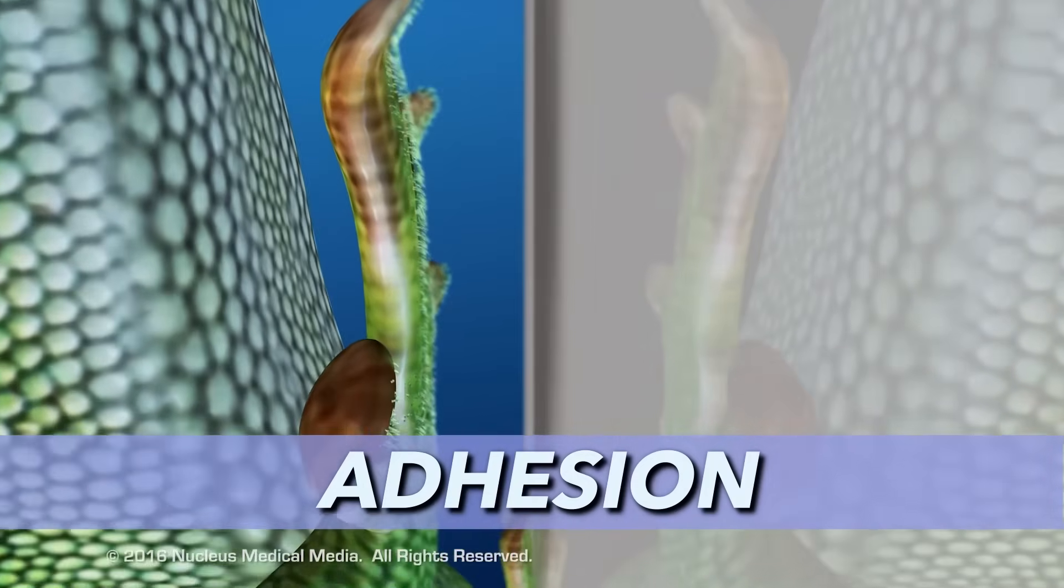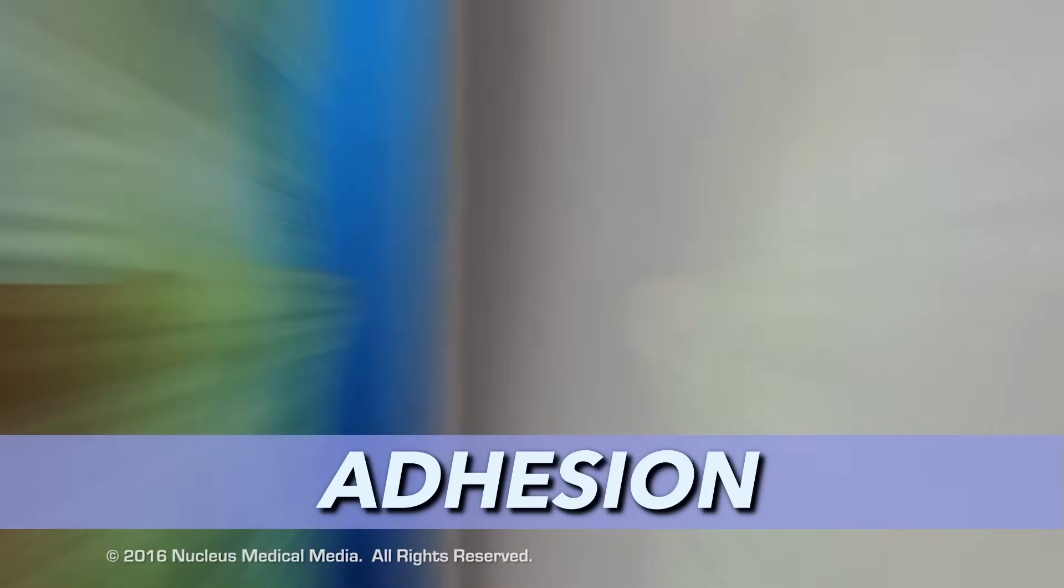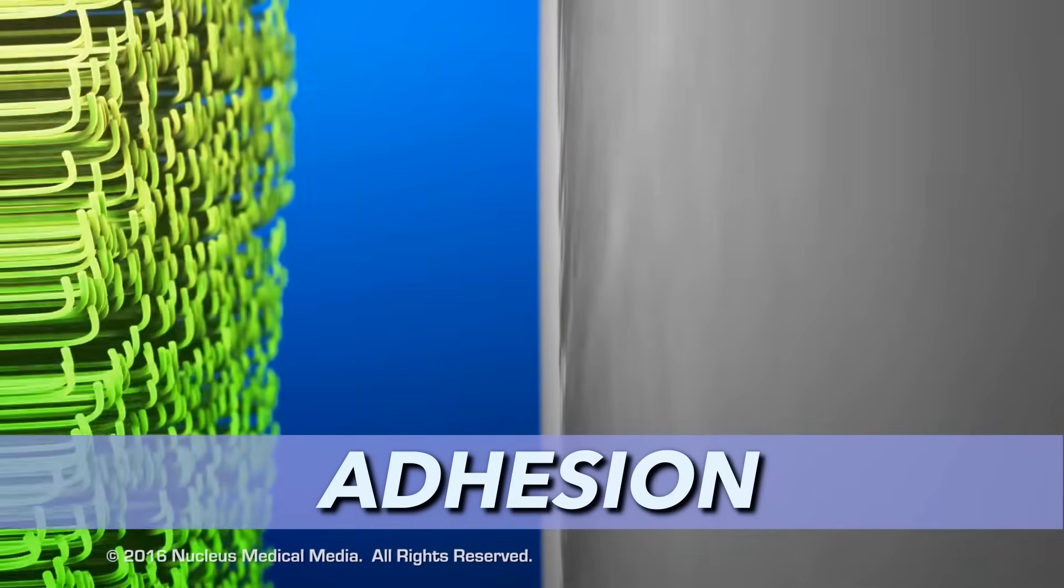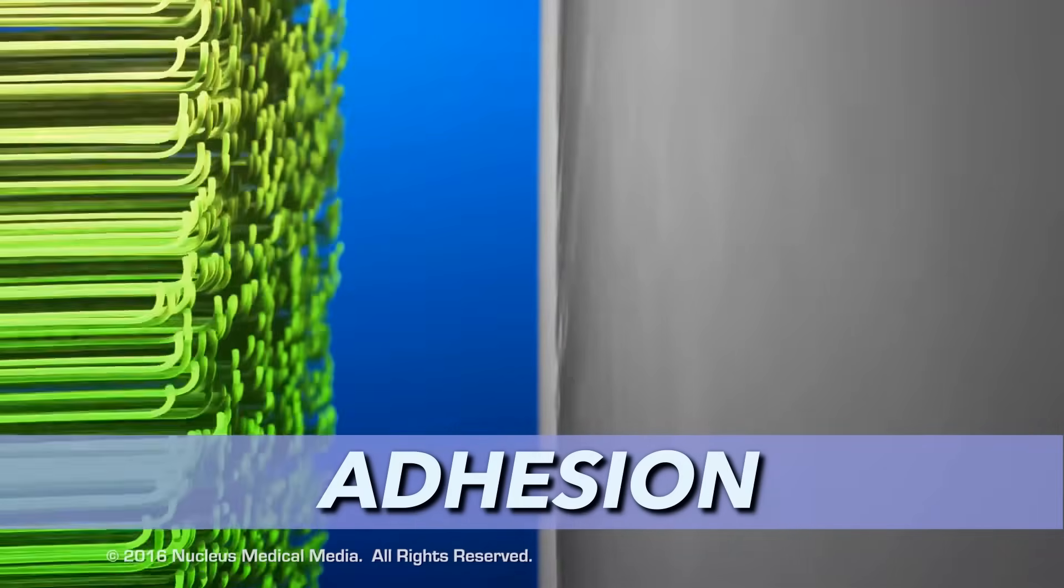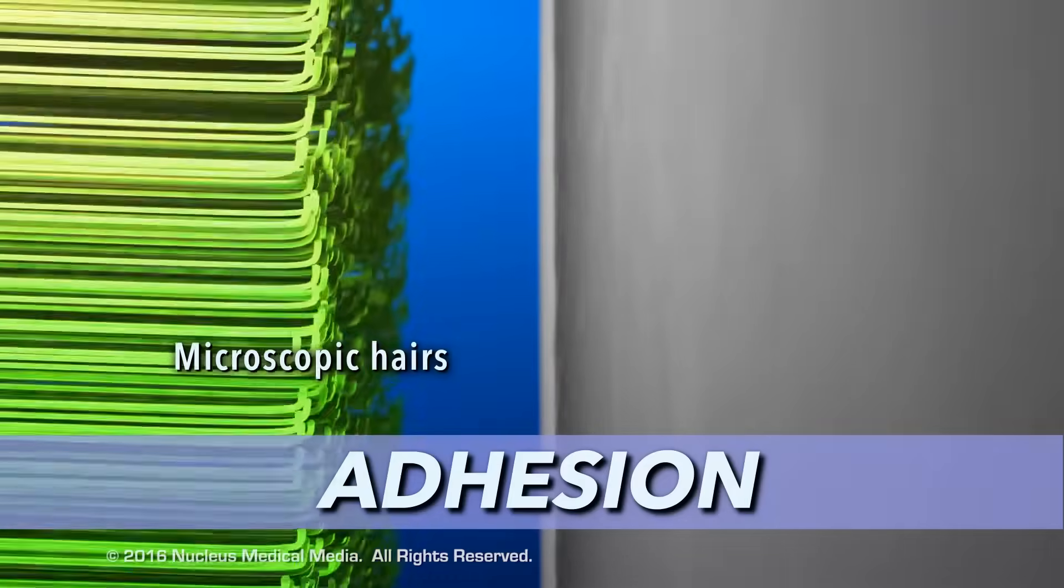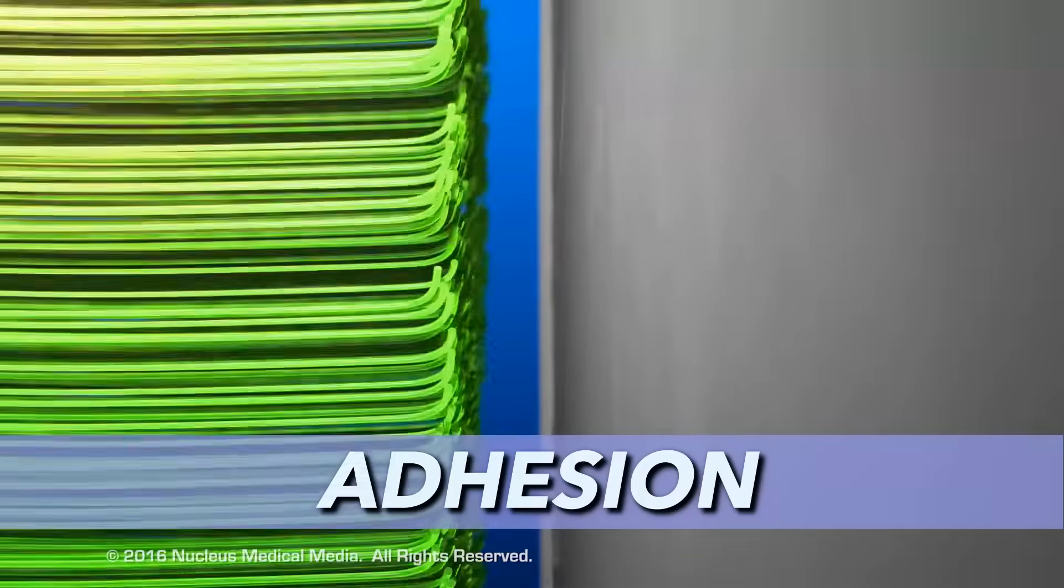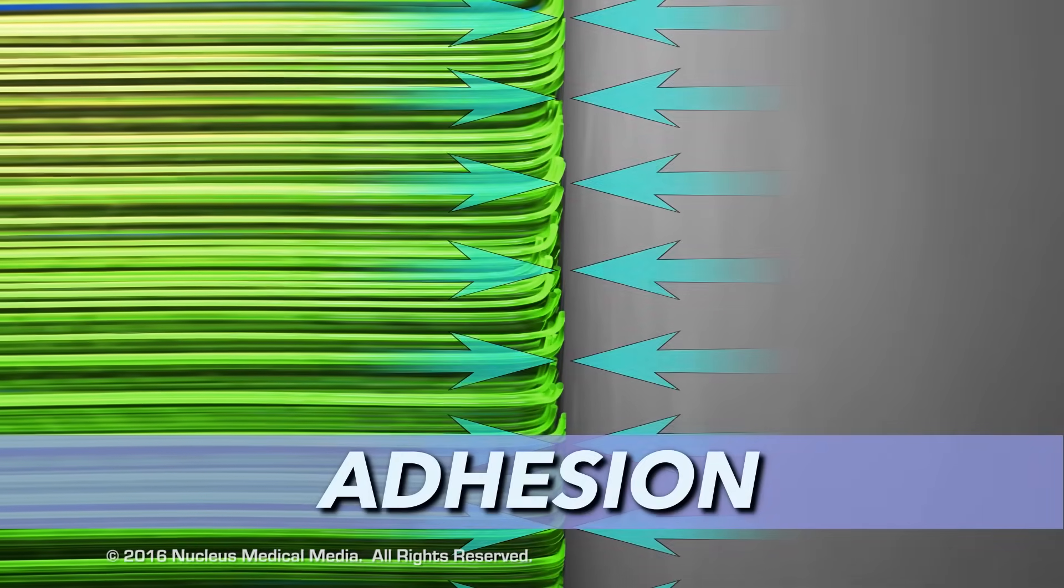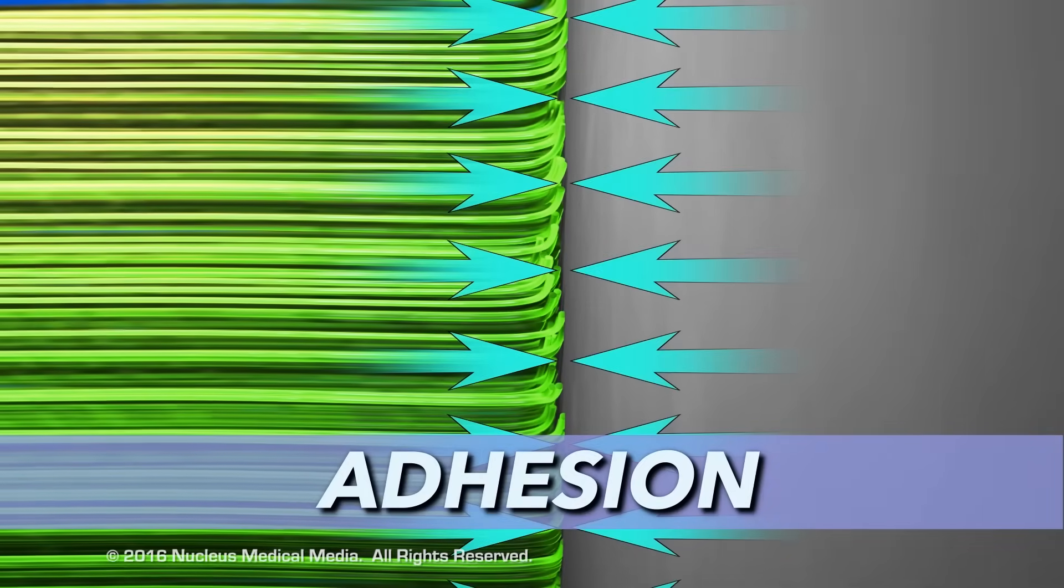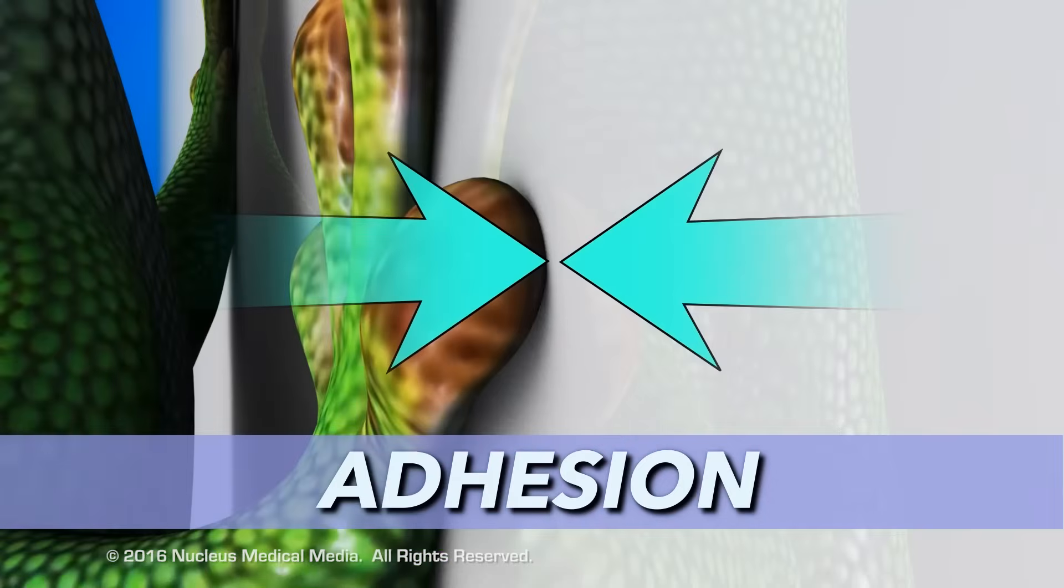Although each molecular connection is very weak, geckos can form millions of them between the molecules within the microscopic hairs on each foot and the molecules in the climbing surface. These connections add up to more than enough adhesion force to support the gecko's weight.